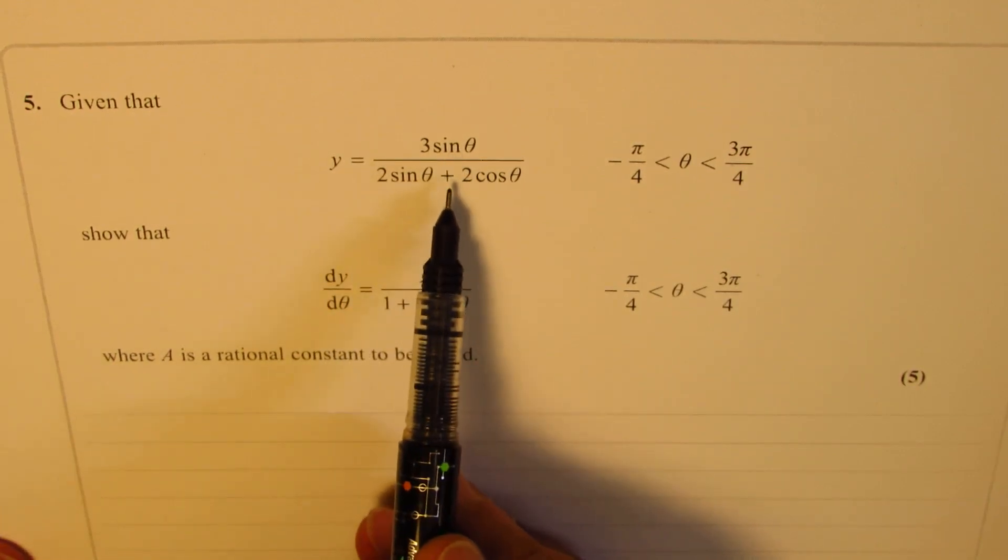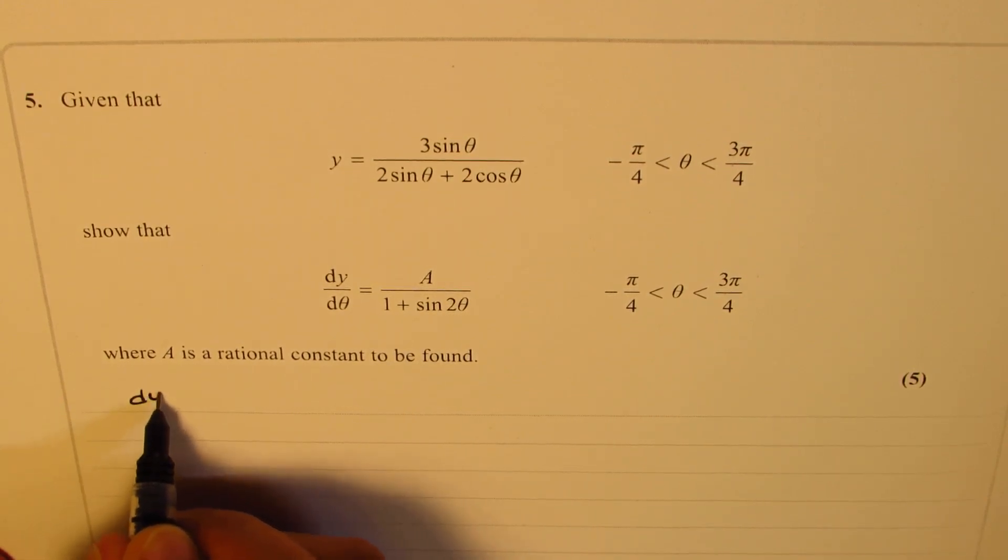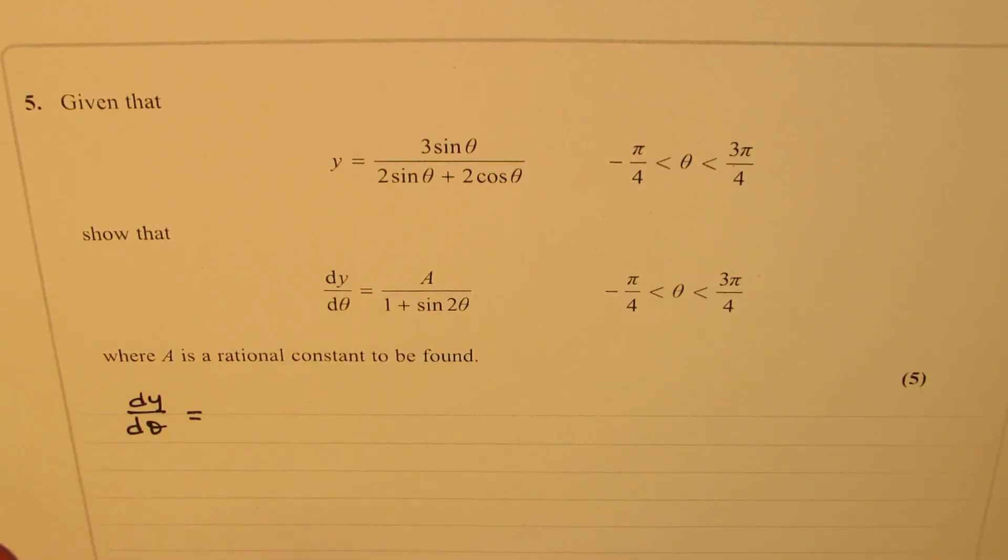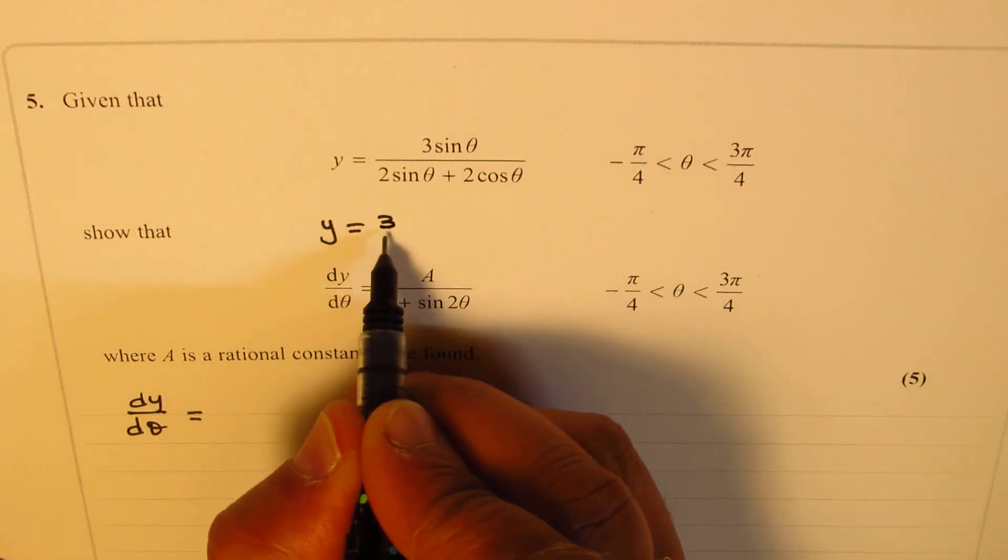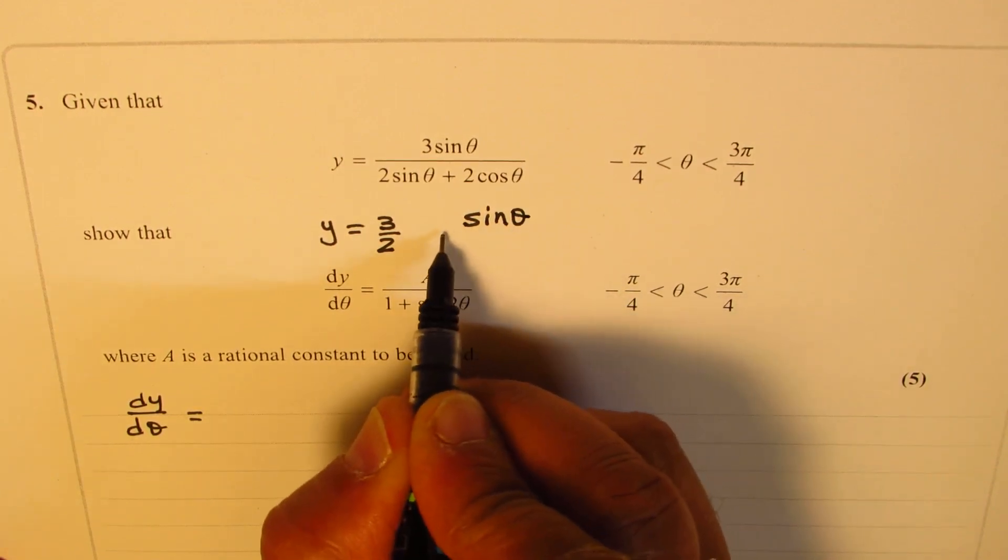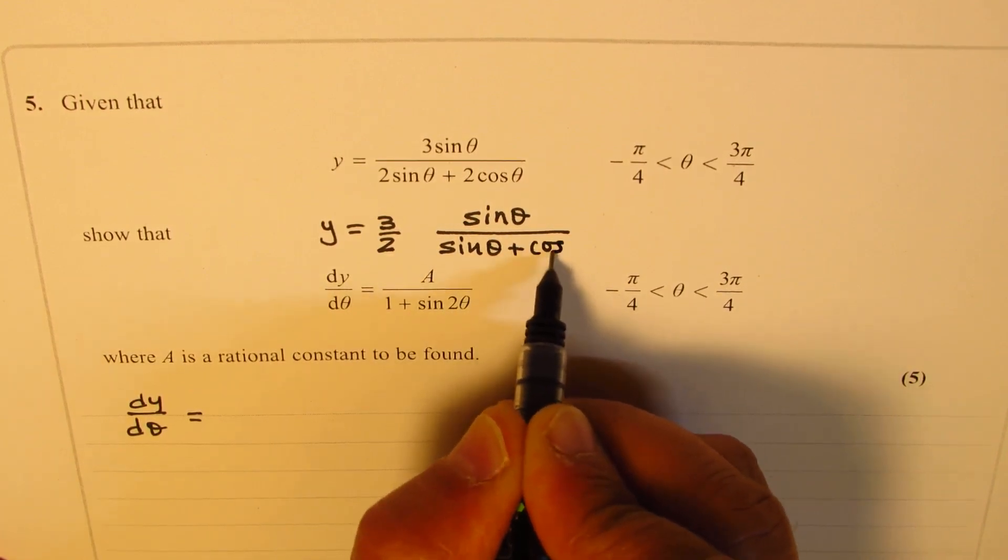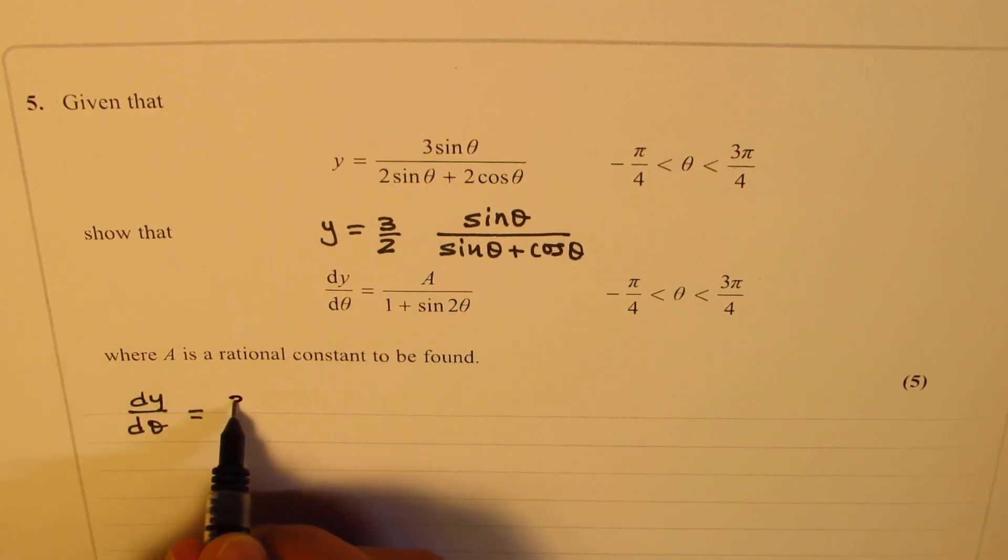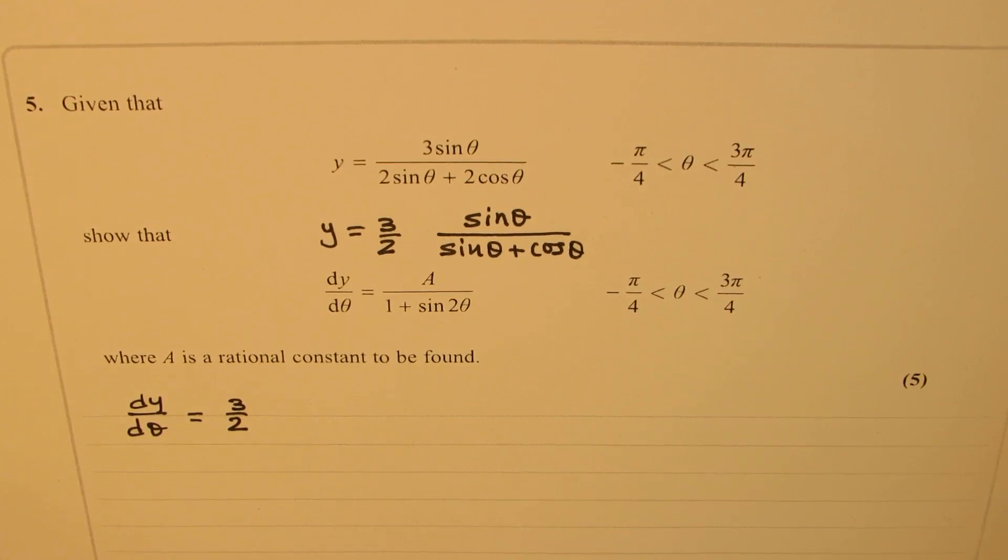So we'll apply the quotient rule to find the derivative. So we get dy d theta as equal to... Now see, this expression, it is better to write this in simplified form. The constant 3 over 2 can be taken common, and then we are left with sine theta over sine theta plus cos theta. So when we find the derivative, we can always keep 3 over 2 outside. So that simplifies our calculations to a large extent.